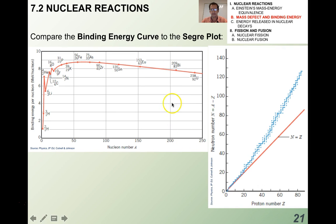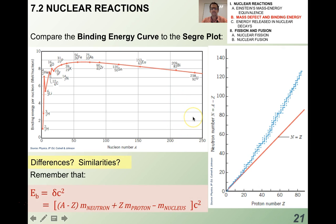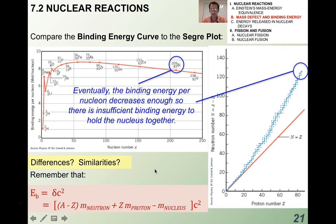Comparing the binding energy curve to the Segré plot — think about any differences or similarities. We can discuss that in class. When doing so, remember what the binding energy is, the algebraic equation for binding energy and how it relates to the mass defect. Eventually the binding energy per nucleon decreases enough so there's insufficient binding energy to hold the nucleus together — that's why the right side of the graph is unstable.